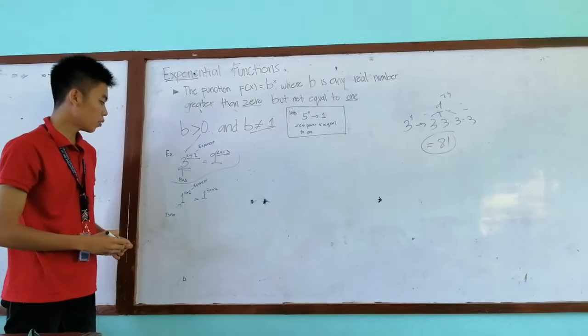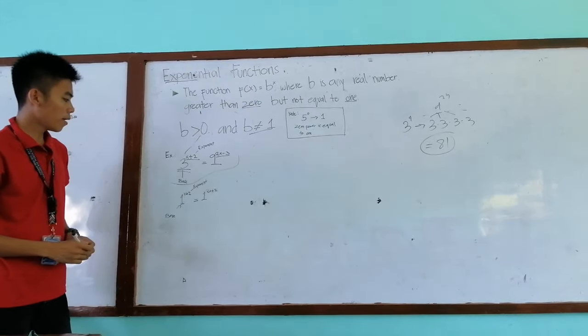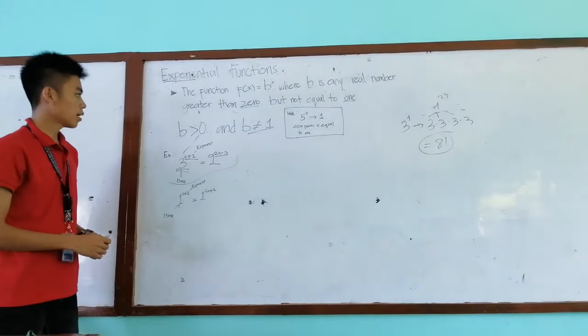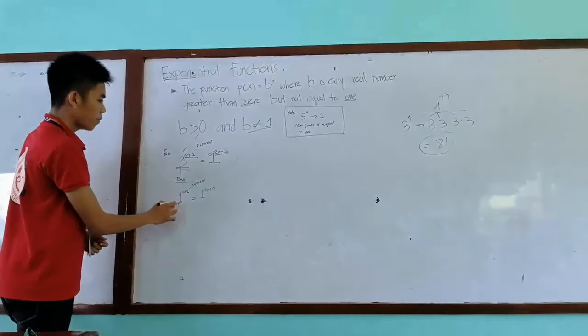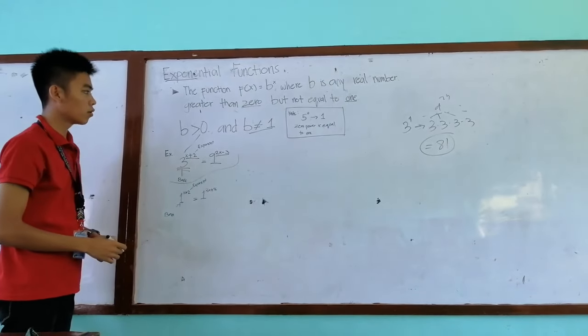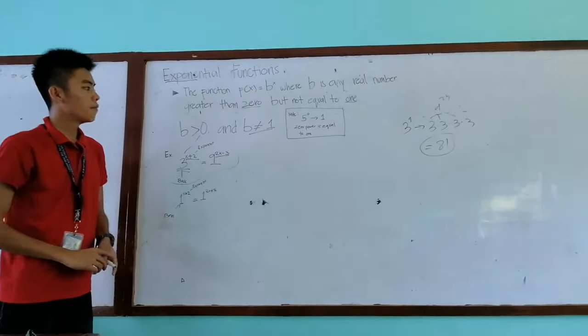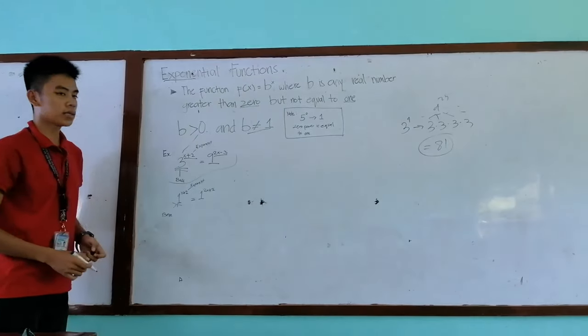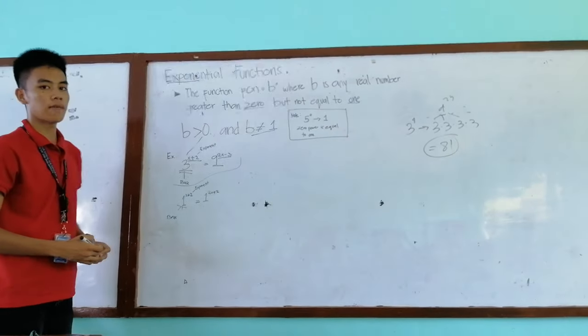But in the second example, 1 raised to the power of x plus 2 is equal to 1 raised to the power of 2x plus 2. As what had said, our base should be greater than 0. And alright, 1 is greater than 0 but in addition, b should not be equal to 1. But our base is equal to 1 so this can't be considered as exponential functions.